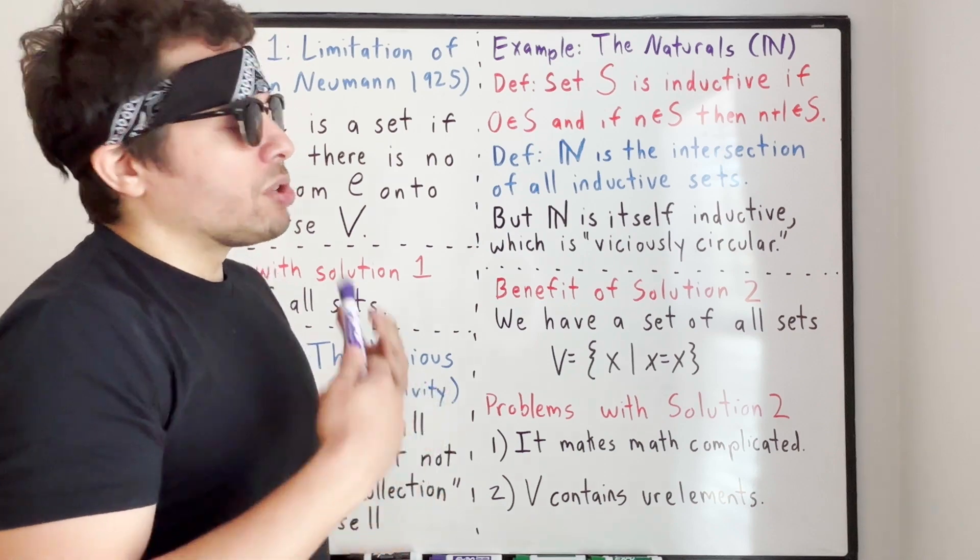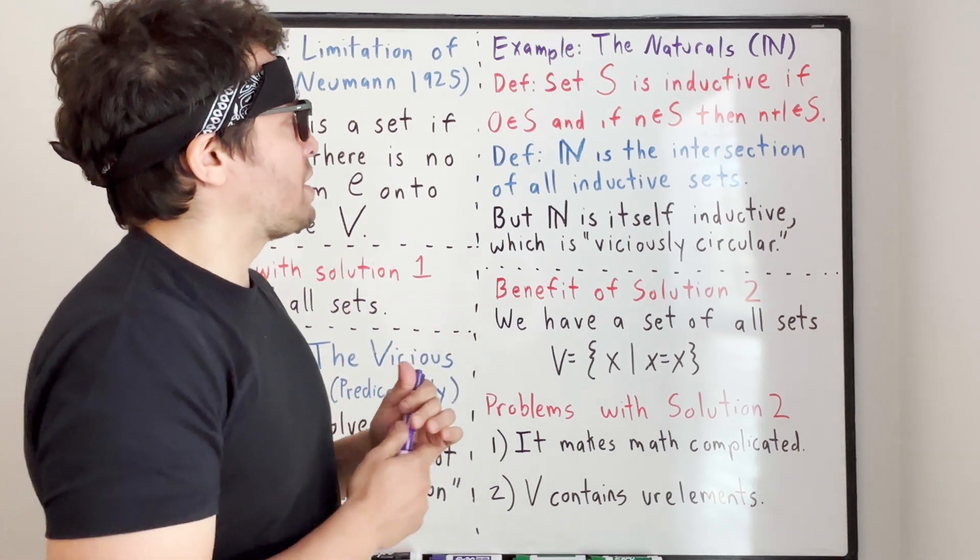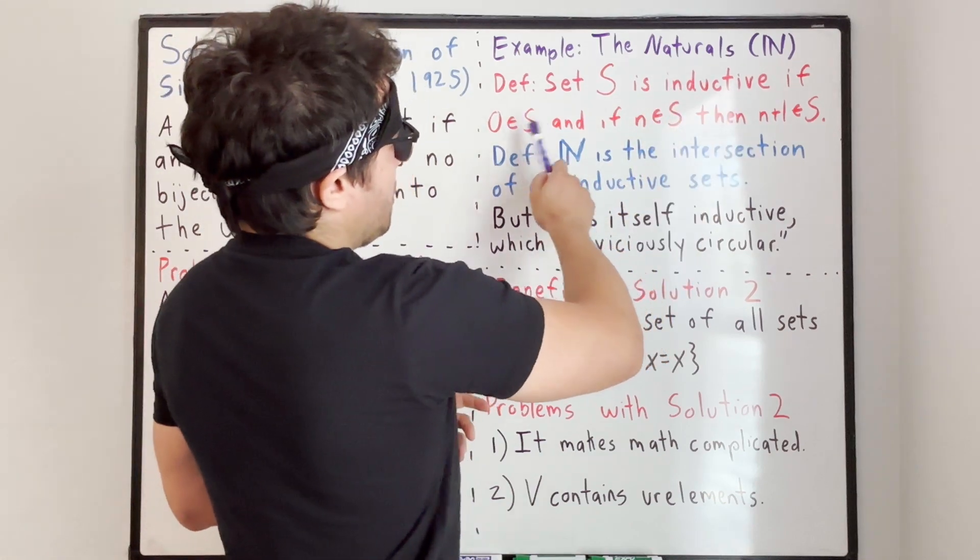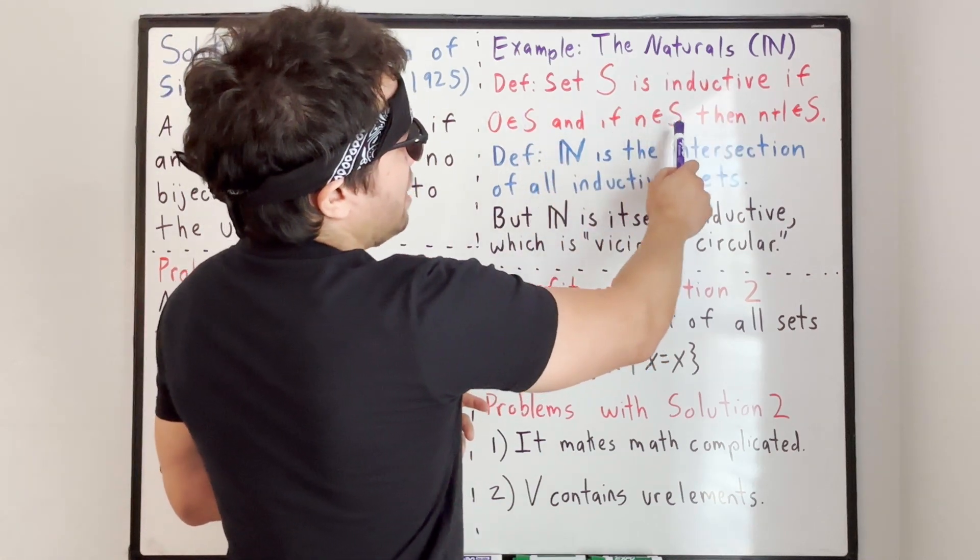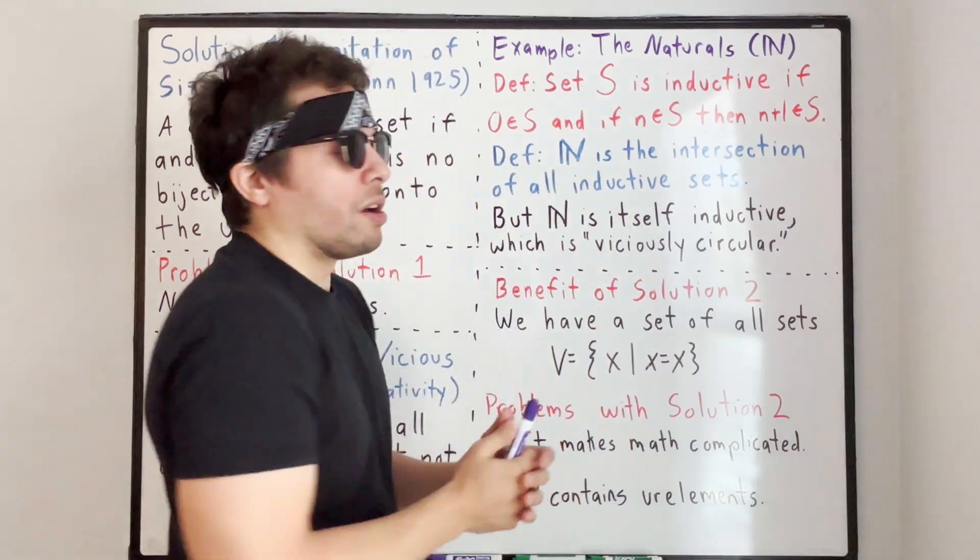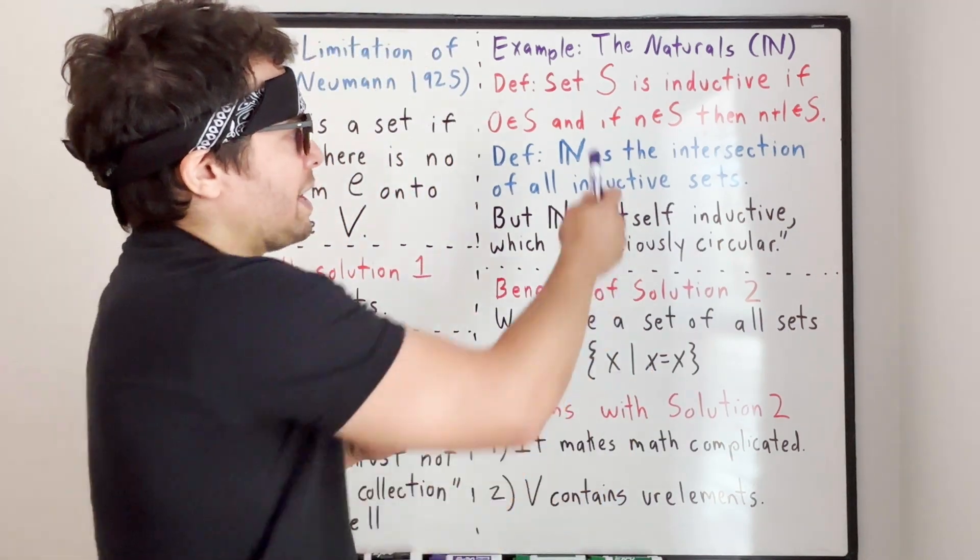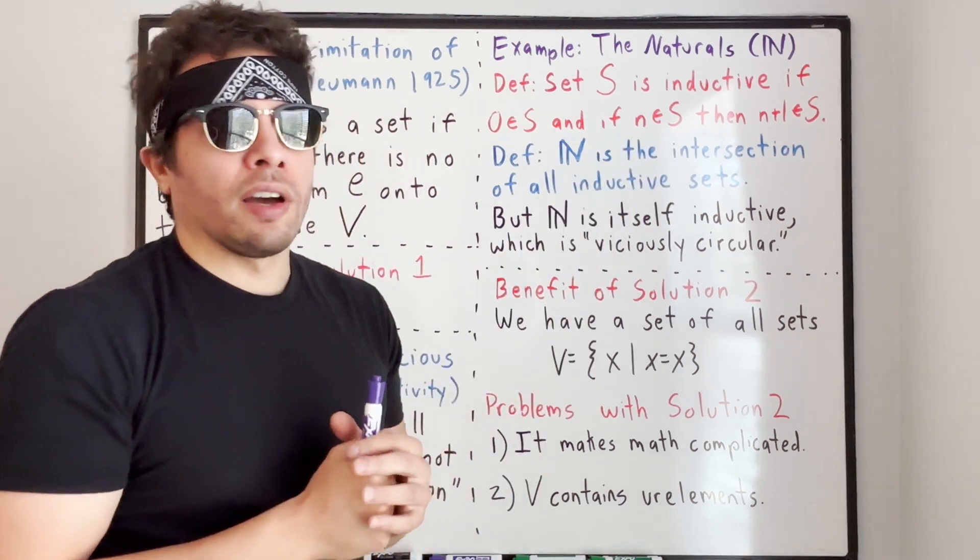In order to define the natural numbers, we need to define what inductive sets are. A set S is inductive if 0 is in S, and if n is in S, then n plus 1 is also in S. And the natural numbers are simply defined as the intersection of all inductive sets.